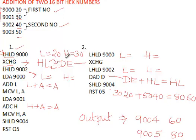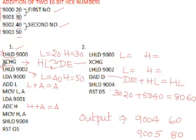Now DE pair has the value 20-30 and HL has the previous DE value. We need to load the second number, which is 40-50, into the HL pair. This is why we performed the exchange — to send the first number 20-30 to the DE pair so that we can load the second number 40-50 into HL using the same LHLD instruction.